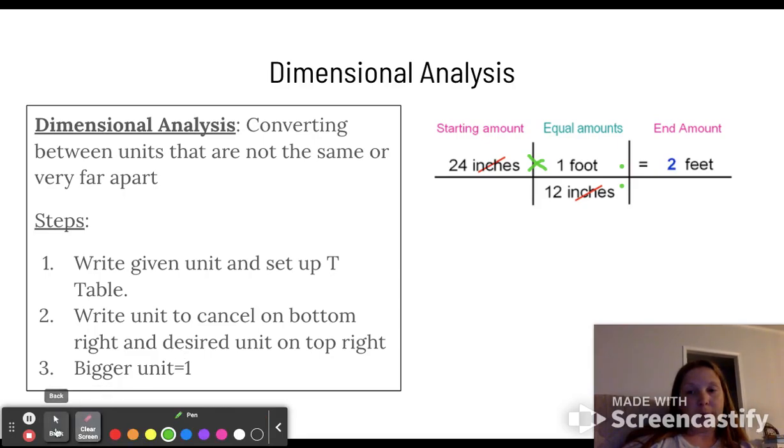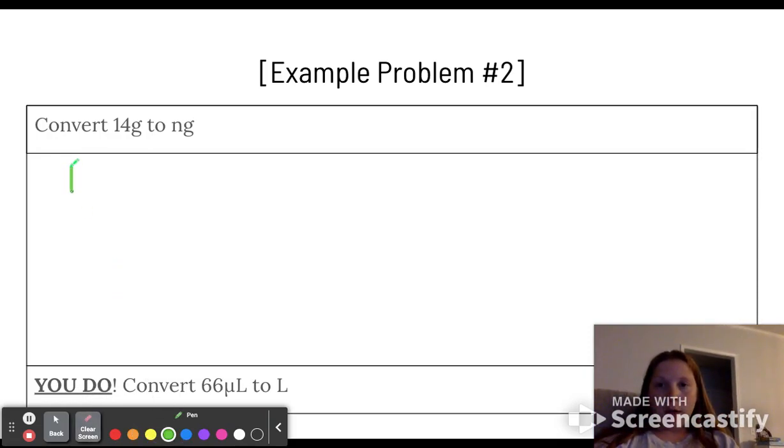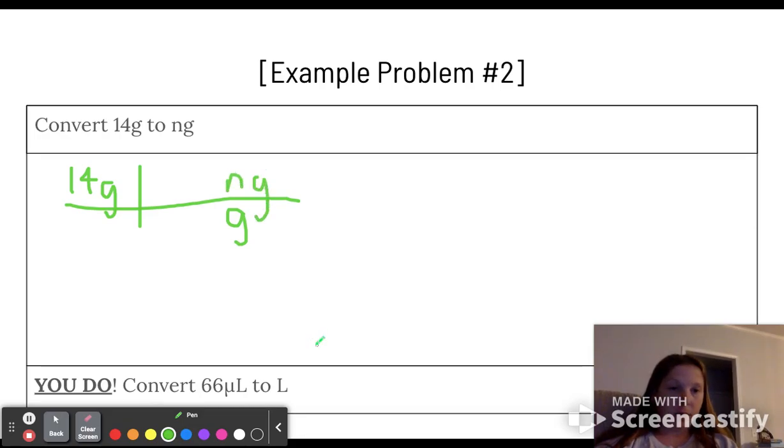Now we're going to go grams to nanograms together. We're going to set up our table: we've got 14 grams. We want to get rid of grams so they go on the bottom, we want to go to nanograms so they go up top. The bigger unit gets one, so for every one gram, that is 10 to the sixth nanograms.